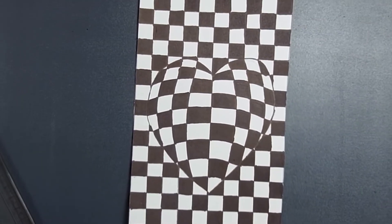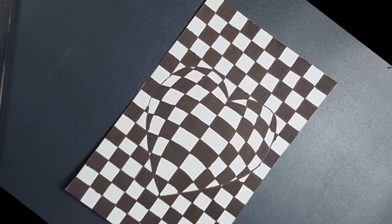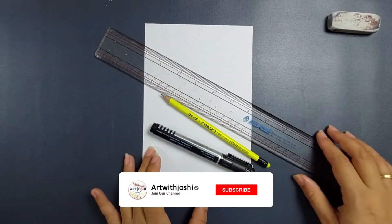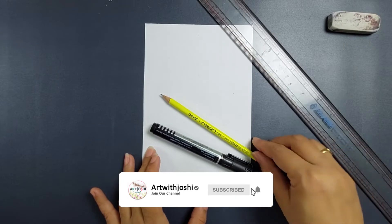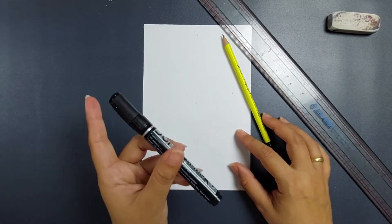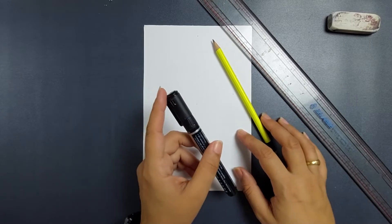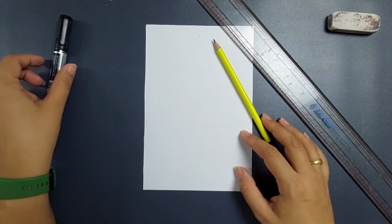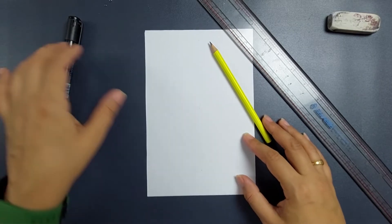Hello everyone, welcome to Art with Joshi and I am Shikha Joshi. Today we'll make a very interesting thing: an optical illusion. For this optical illusion we require a scale, pencil, a sheet, and a marker. Let's create an optical illusion and we'll create a heart in which we'll make the optical illusion. So let's start.